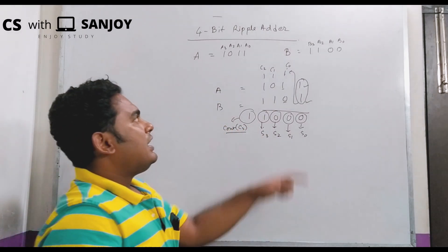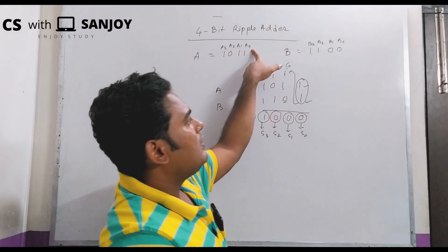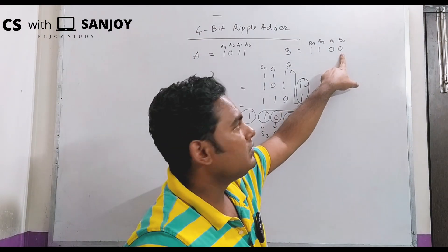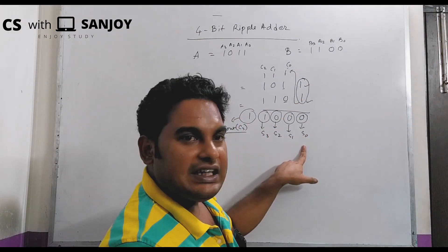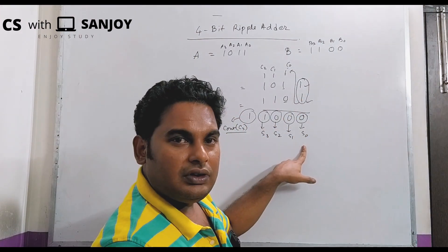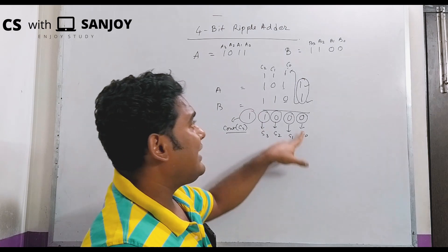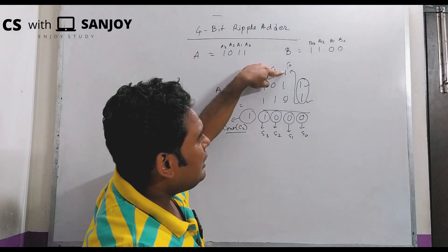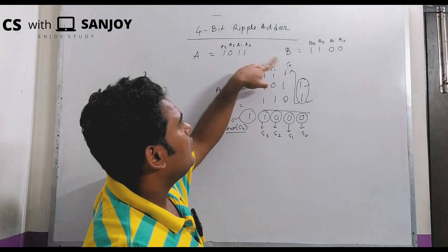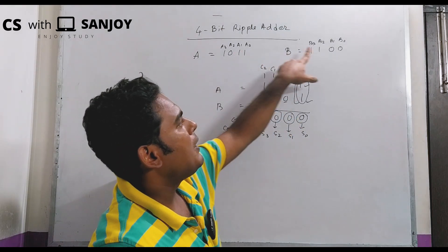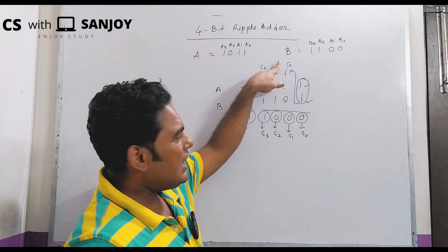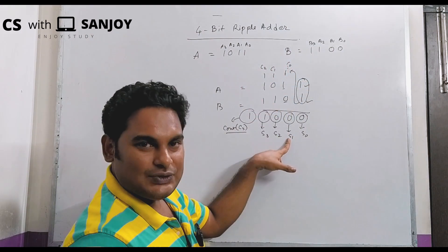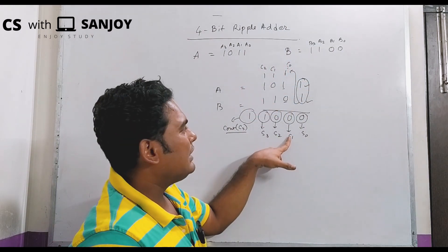That means A0 and B0 add, giving sum S0 and carry C0. So the other one is A1, B1, with carry-in C0, and add to give S1.